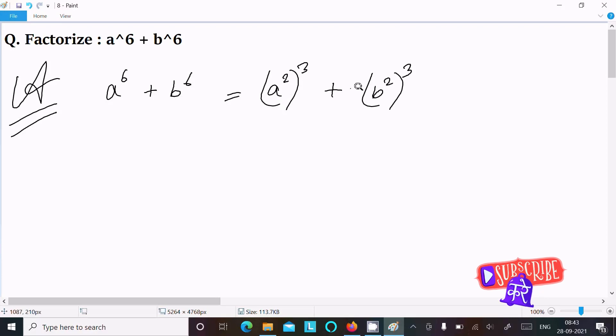So 2 into 3 is 6. After that here, suppose this all term is a, this all term is b. Between there plus and power is 3, whole power 3. So here this is the form of a^3 plus b^3.